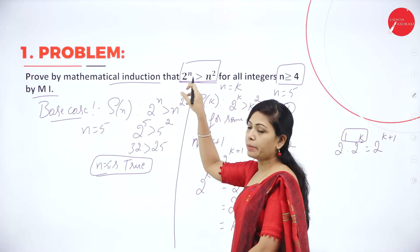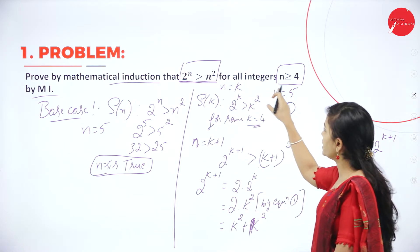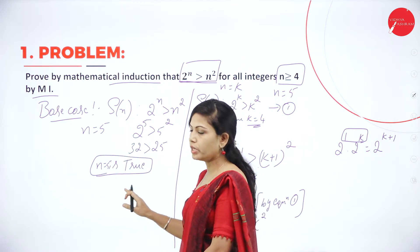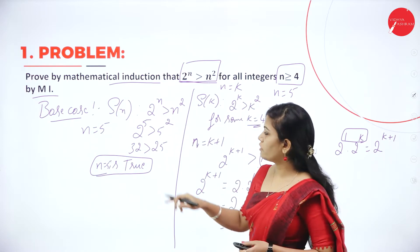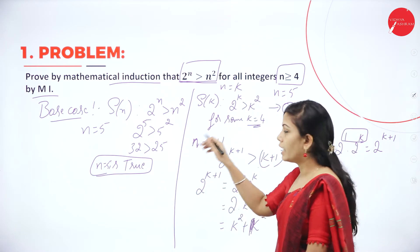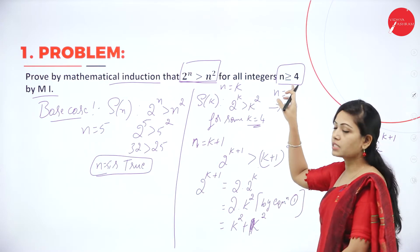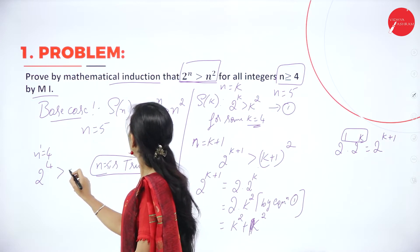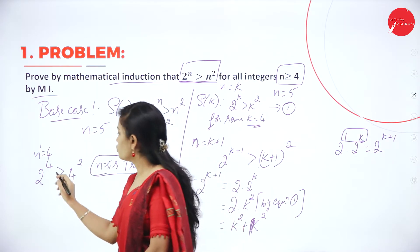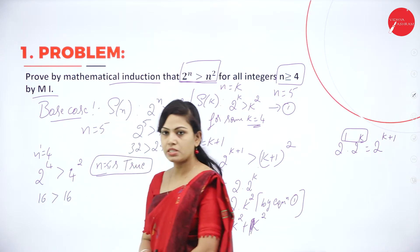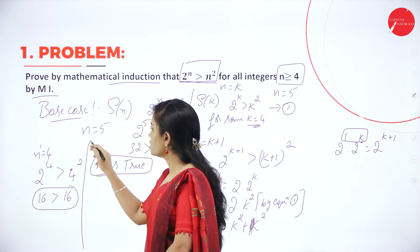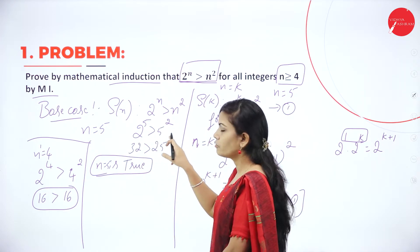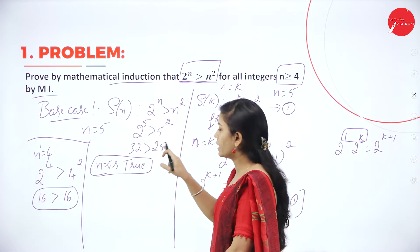The mathematical statement is 2 power n is greater than n square for all integers n greater than or equal to 4. In the base case, if you give n equal to 4, you get 2 power 4 greater than 4 power 2, which is 16 greater than 16 — that is not true. So we take n equal to 5: 2 power 5 greater than 5 square gives 32 greater than 25, so n is true.